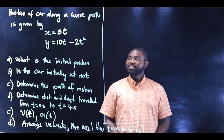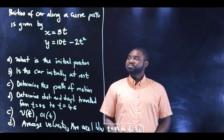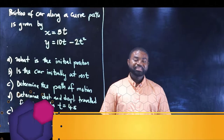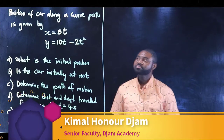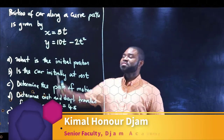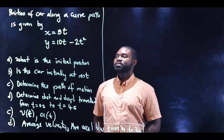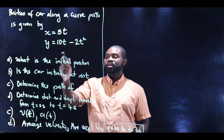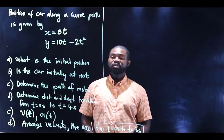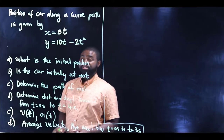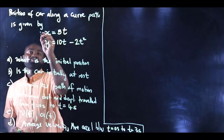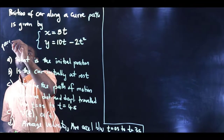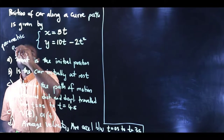Hi everyone. In this example we will apply what we learned in this module in solving a very interesting problem. The position of a car along a curved path is given by x equal to 5t and y equal to 10t minus 2t squared. This set of equations are called parametric equations.